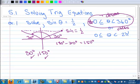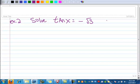Now let's do another example. Example 2: solve tangent x equals negative square root of 3, and we want this one between 0 and π. So we just want half of the circle here.